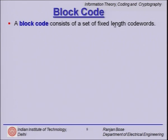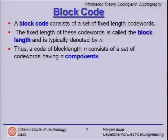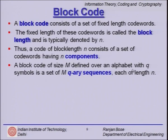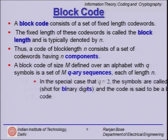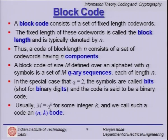We now talk about block codes. A block code consists of a set of fixed-length codewords, and that is the block length, typically denoted by n. A block code of size m defined over an alphabet of q symbols is a set of m q-ary sequences each of length n. In general, m is equal to q raised to the power k for some integer k, and such a code is called an (n, k) code.